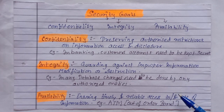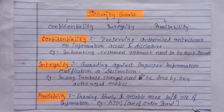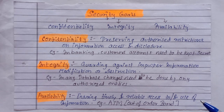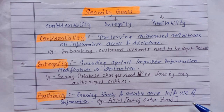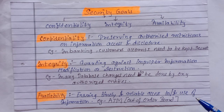Next is availability: ensuring timely and reliable access to or use of the information. When some information is created and stored, it needs to be available to authorized entities — if information is not available then storing it is useless. Example: ATM out of order. The unavailability of information is just as harmful for an organization as the lack of confidentiality and integrity.